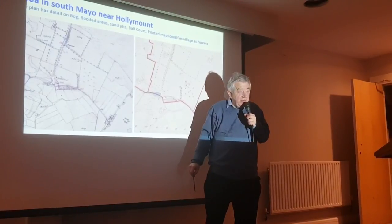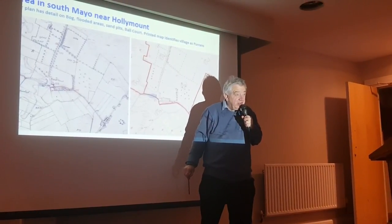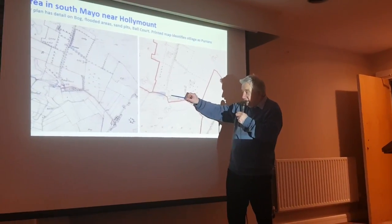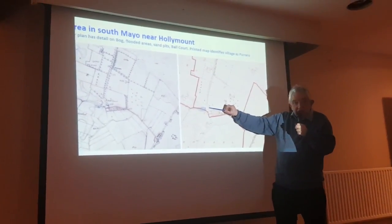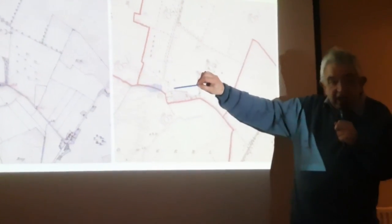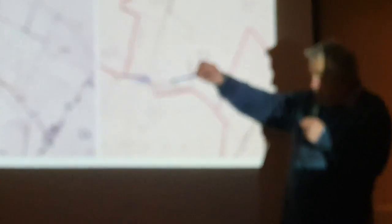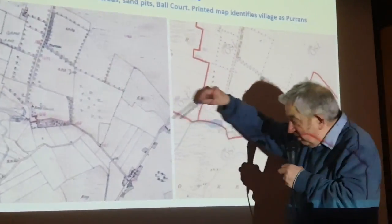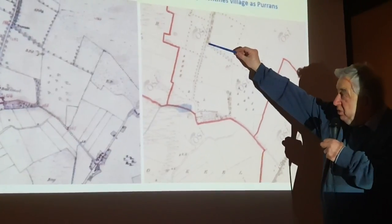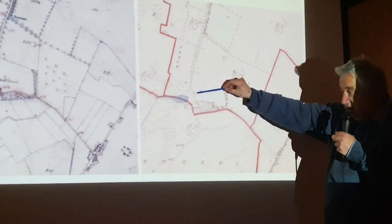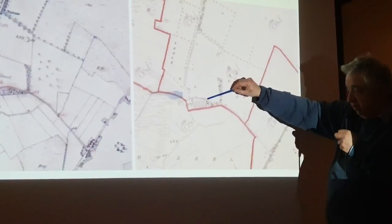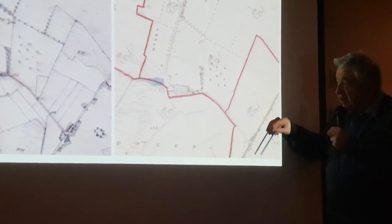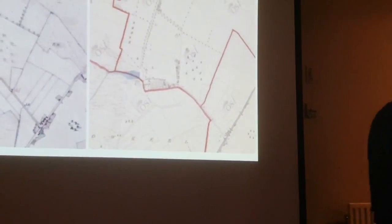The Ordnance Survey, being rather humourless, doesn't want to put in a ball court on its final plan. So it puts in the name of the village, and ball court has been knocked out. There's also a place called Thorn Hill on the fair plan that doesn't appear on the final one. Here, on the fair plan it appears as Glash Holy Well, and then it appears as Tupper Naglash. They keep changing things around, and they change the spelling quite interestingly as well.